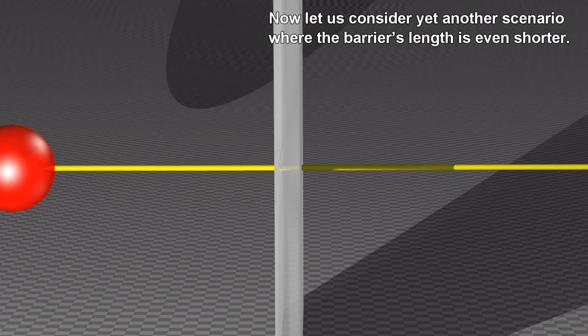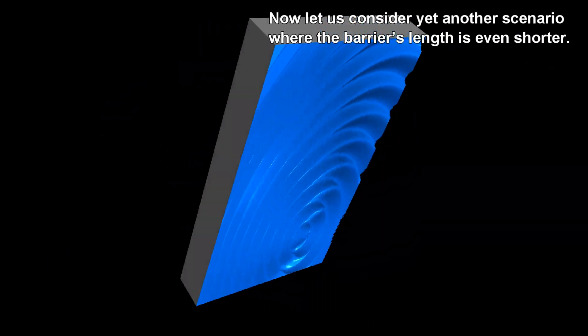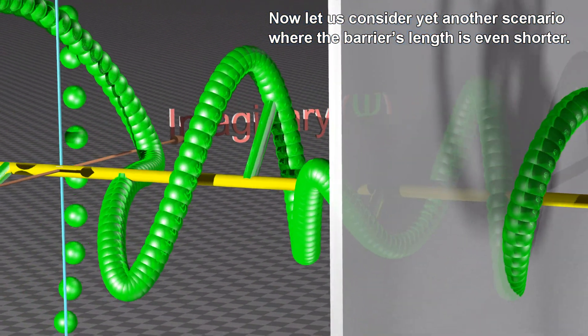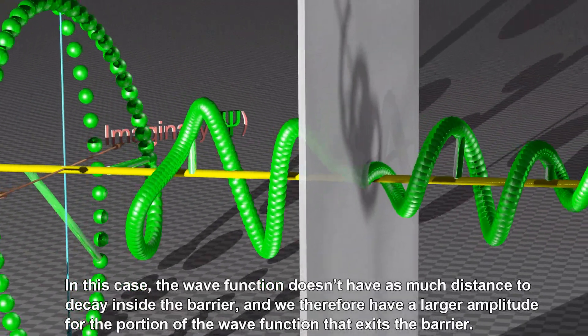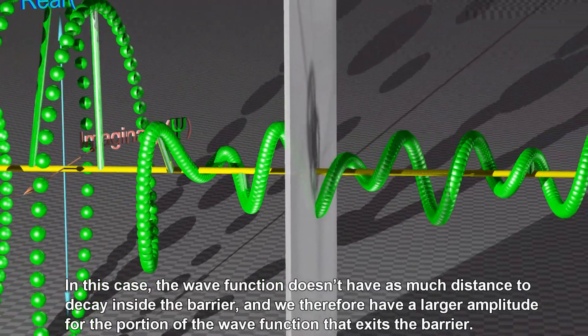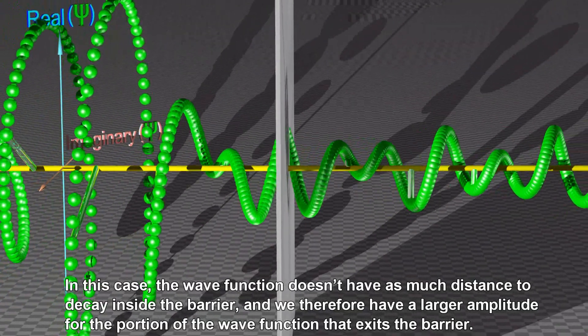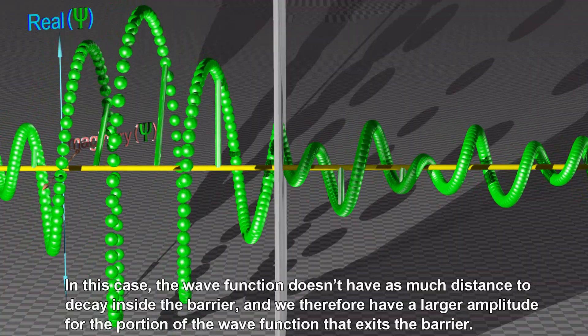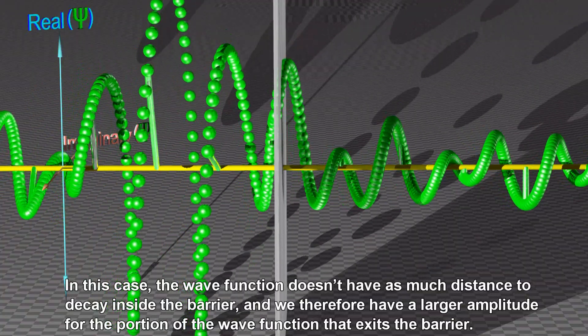Now let us consider yet another scenario where the barrier's length is even shorter. In this case, the wave function does not have as much distance to decay inside the barrier, and we therefore have a larger amplitude for the portion of the wave function that exits the barrier.